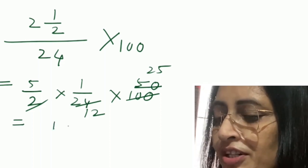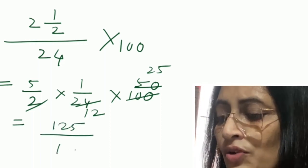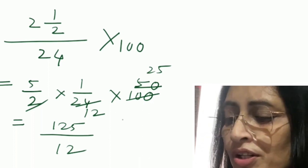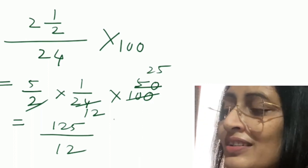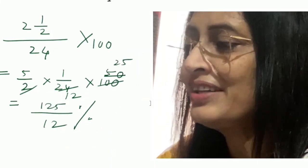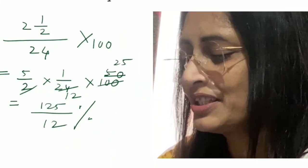And now what to do? This is 125 by 12. Now what to do? What is missing here? Exactly. Symbol likhna baqi hai, right? Now we are giving this percent symbol.